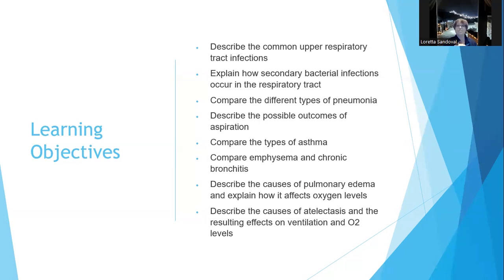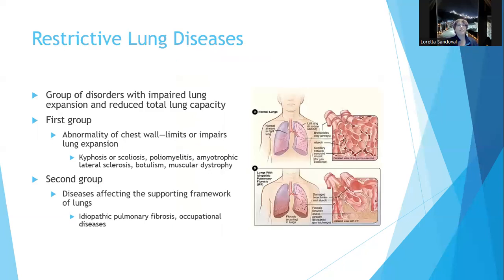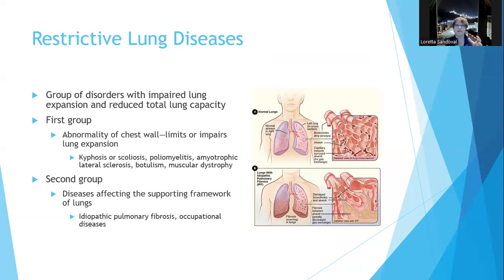The restrictive lung diseases affect oxygen levels. If your lungs are restricted for whatever reason, you can't get in enough oxygen. Restrictive lung diseases are a group of disorders with impaired lung expansion and reduced total lung capacity. The first group involves abnormalities of the chest wall that limit or impair lung expansion — such as severe kyphosis or scoliosis. Poliomyelitis, amyotrophic lateral sclerosis, botulism, and muscular dystrophy also cause impaired lung expansion through their effects on the muscles of the chest wall.